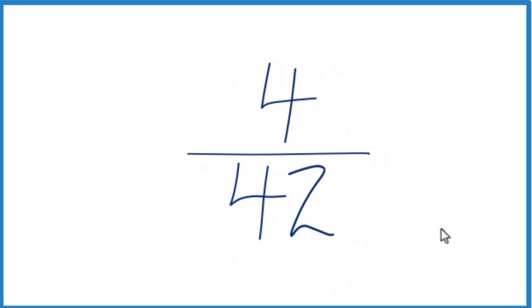To do that, we want to find a common factor, the greatest common factor, and that's a whole number that goes into 4 and 42.